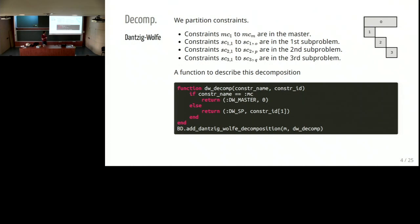We know how to decompose the problem, so we must give the decomposition to the model. We can see that annotating the constraints is sufficient. We write a function that takes as arguments the name of the constraints and the ID of the constraints, and returns the annotation. For instance, constraint SE21 has name SE and ID tuple (2,1), and it returns the annotation, the index of the subproblem, and the ID. So the constraint goes in the second subproblem. Then we provide this annotation function to the model with the add decomposition method.